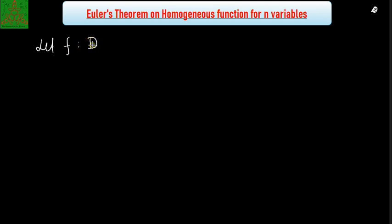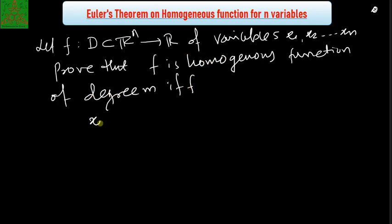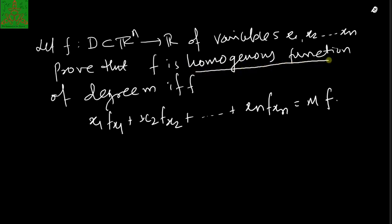Let f be a function of n variables, defined over D which is a subset of R^n to R, with variables x1, x2, up to xn. Then f is a homogeneous function of degree m if and only if x1·fx1 + x2·fx2 + ... + xn·fxn = m·f. Those who have not watched the video on homogeneous functions can find that link as well. The homogeneous function of degree m in variables x1, x2, up to xn is given, and we need to prove this expression.